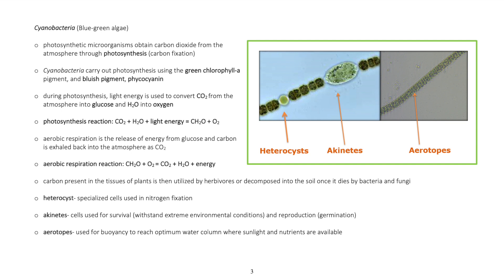Cyanobacteria carry out photosynthesis using the green chlorophyll pigment and bluish pigment phycocyanin. During photosynthesis, light energy is used to convert carbon dioxide from the atmosphere into glucose and water into oxygen.